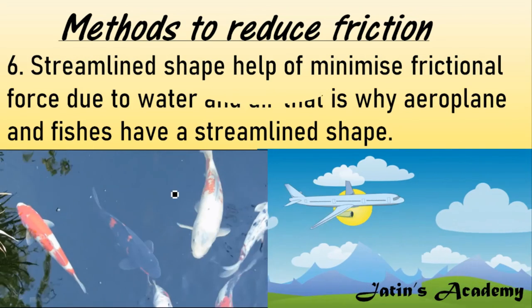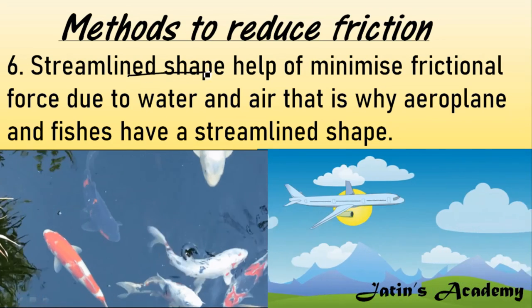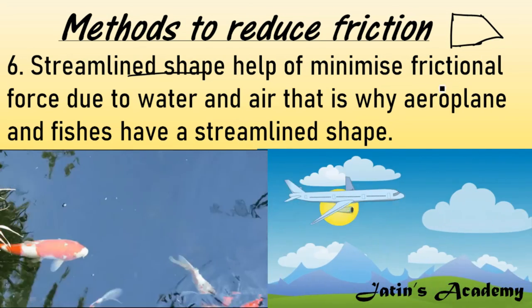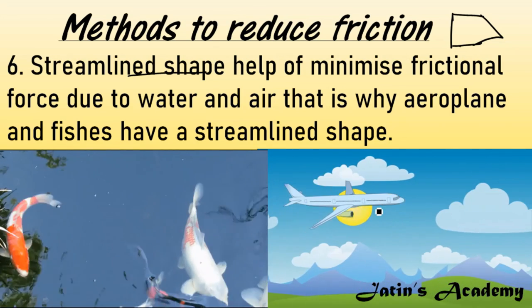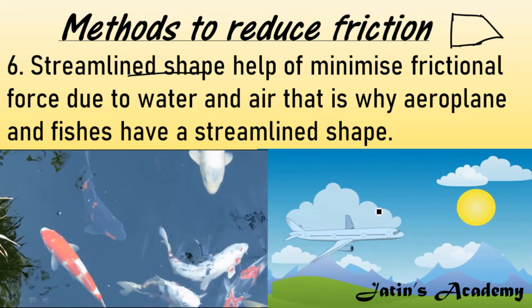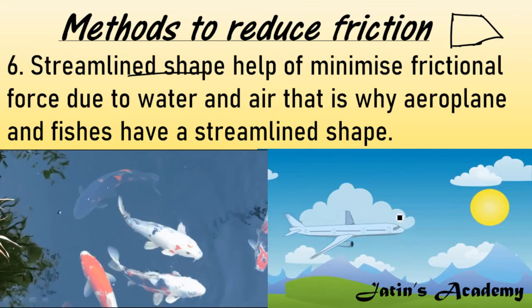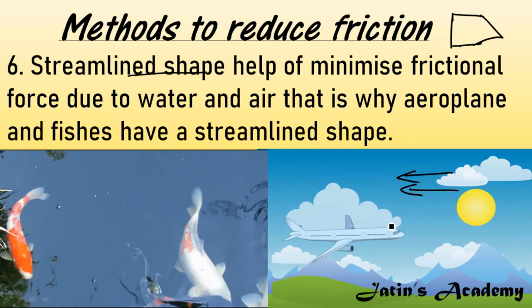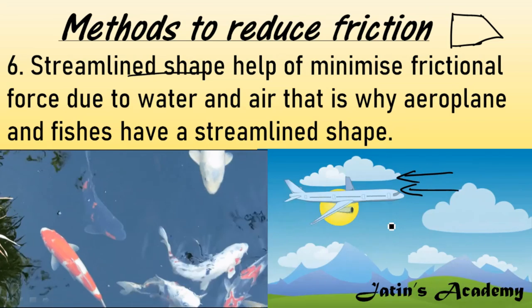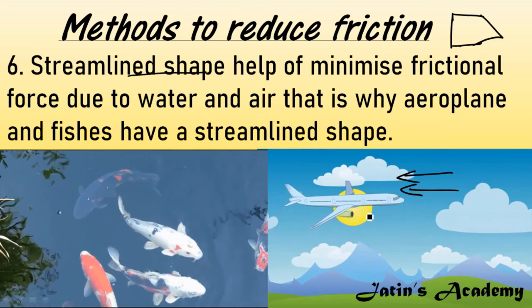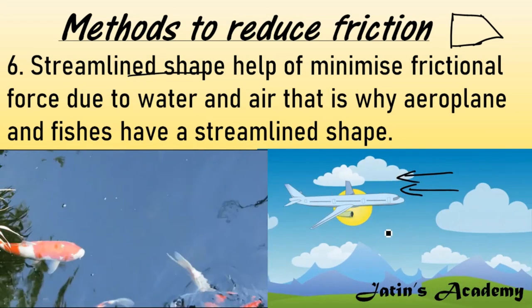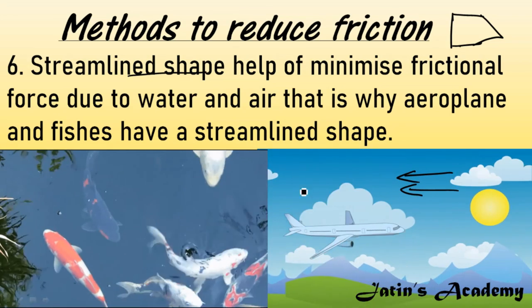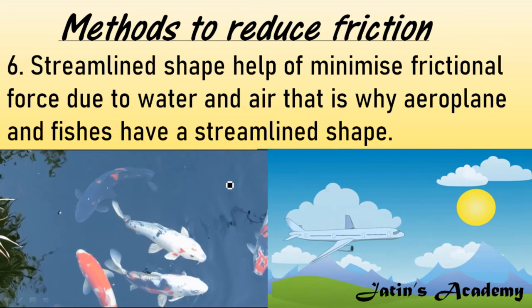Sixth method: use a streamlined shape. A streamlined shape is broad at the back and narrow at the front — like the shape of a fish or an aeroplane. When a plane moves through the air, air also provides frictional resistance. The streamlined shape cuts through air particles, reduces air friction, and allows the plane or fish to move more easily.